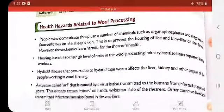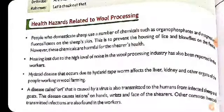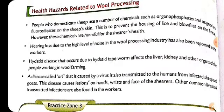Next comes health hazards related to wool processing. People who domesticate wool use chemicals like organophosphates and magnesium fluorosilicates to remove lice and blowflies from the bodies of sheep. However, these chemicals are so harmful that they can also cause diseases to the shearers and those who handle the fleece.